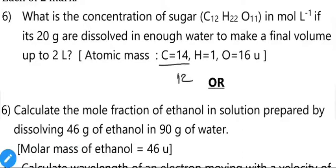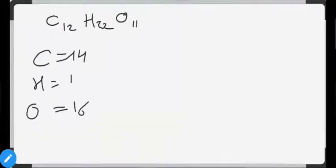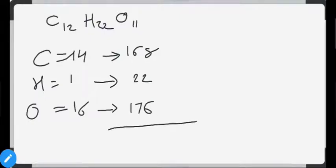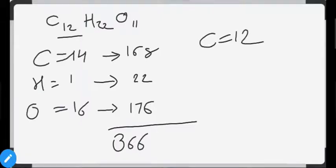Note that the carbon mass is given as 14, not the usual 12 — this implies an isotope of carbon is used. Always use the values given in the numerical, not your own. Calculate molecular mass of C₁₂H₂₂O₁₁: 12 carbons × 14 = 168; 22 hydrogens × 1 = 22; 11 oxygens × 16 = 176; total molar mass = 366 grams.